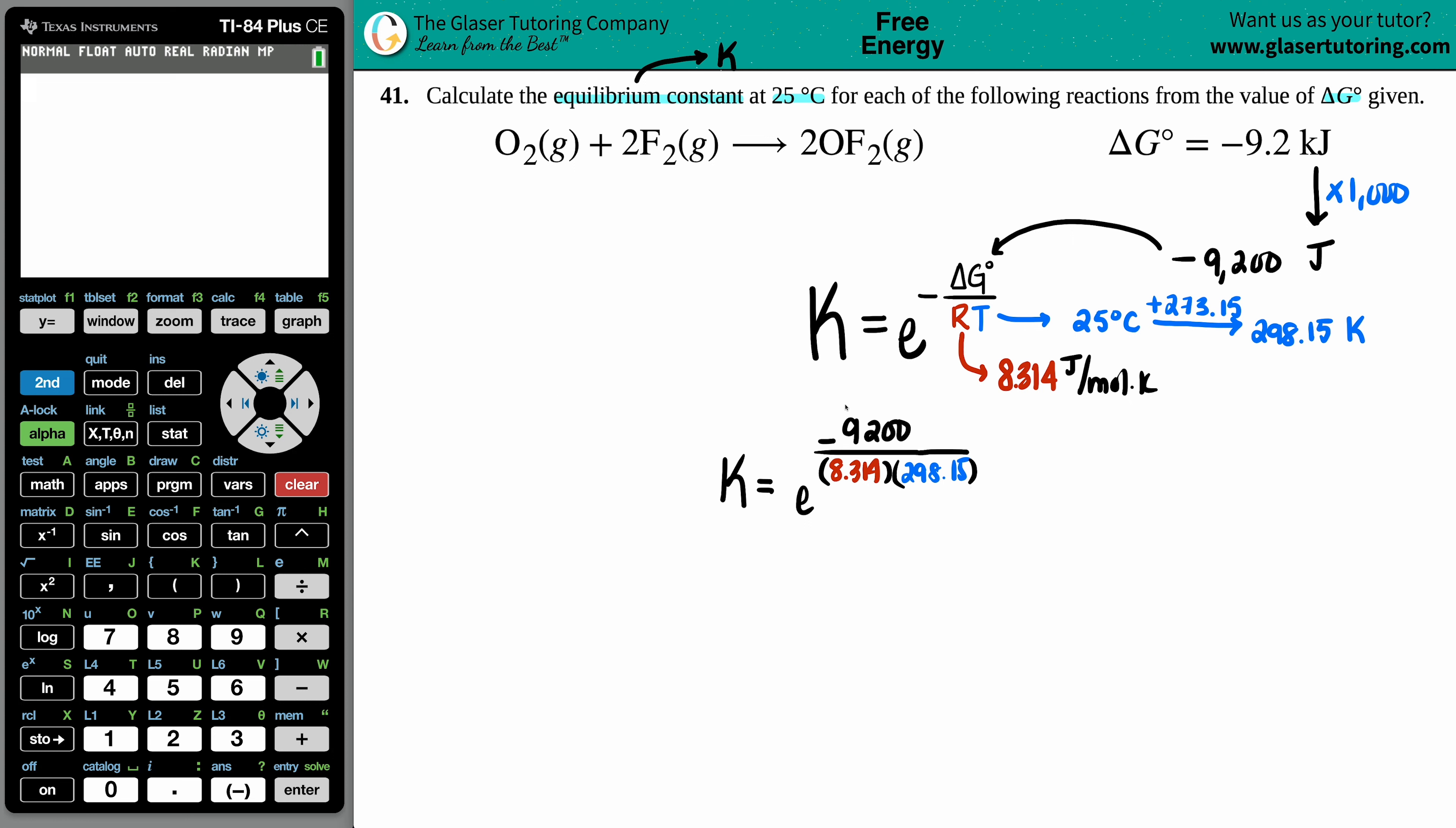Now for this, what I would do is I would do this first, right, get that to just being one number. So I'm just going to say, okay, K equals e raised to the what. So I'm going to go over to calc: negative 9200 divided by 8.314.